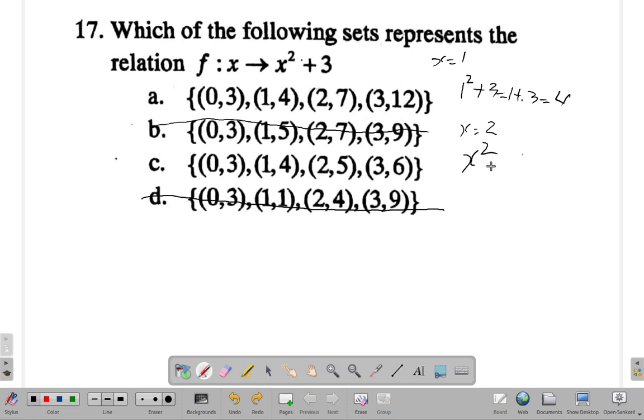X squared plus 3 would be 2 squared plus 3. 2 squared is 4, 4 plus 3 is 7. So when you put in 2, you should get out 7, not 5. So c is out, the only one left standing is a.